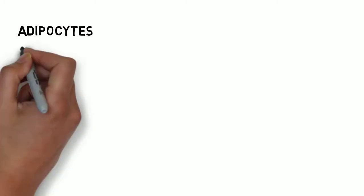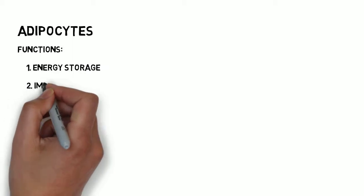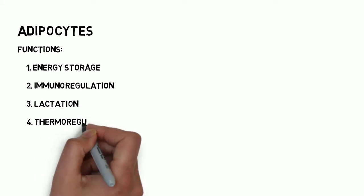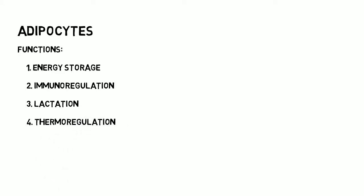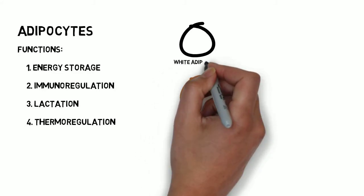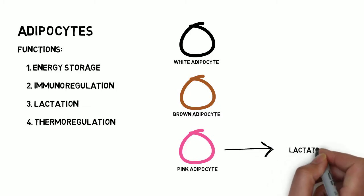Adipocytes are not just the cells that everyone goes on these crazy diets to get rid of. They actually have really important functions in maintaining homeostasis, such as energy storage, immunoregulation, lactation and thermoregulation. There are three main types of adipose tissue found in mammals, including white, brown and pink. Pink adipocytes are found in the mammary gland during pregnancy and lactation. This type will not be discussed further in this video.